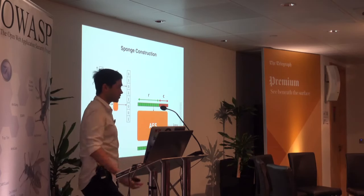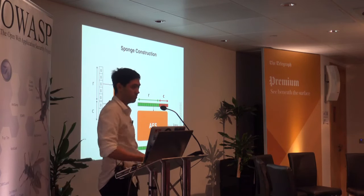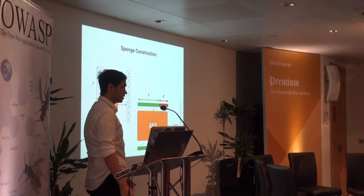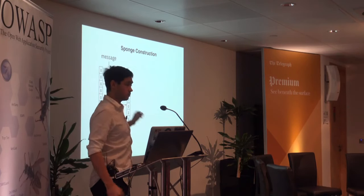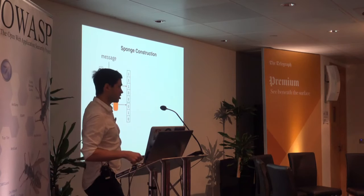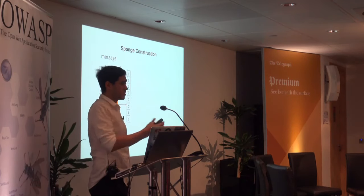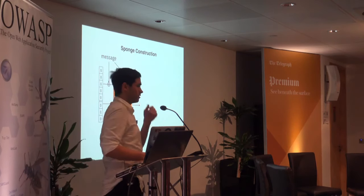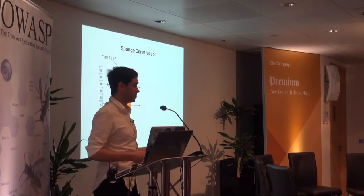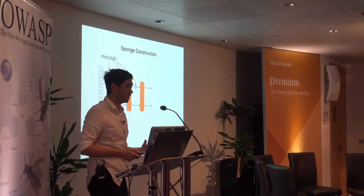SHA-3 is a hash function, so we need to take some input — some message we want to hash. The easy way is to take our message and XOR it with the public part only; we don't touch the secret part. If our message is longer than the public part, we split it into blocks the size of the public part. After permuting, we XOR the next block with the public part again, then permute again. This process of getting the message into the algorithm is called absorbing.